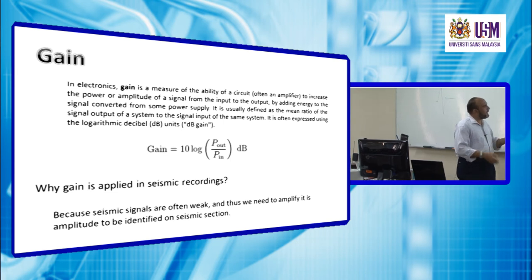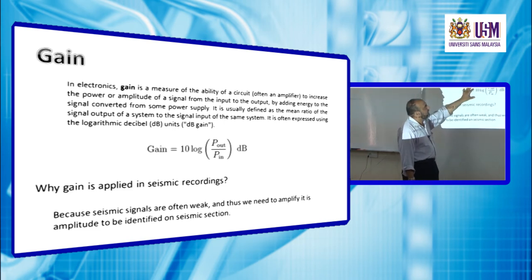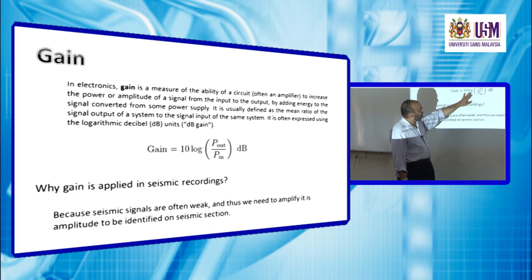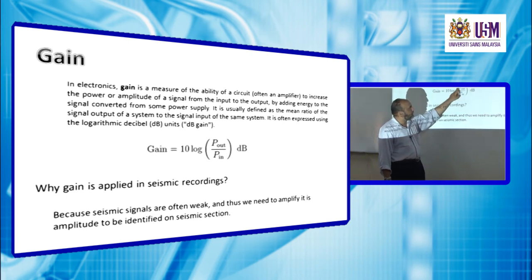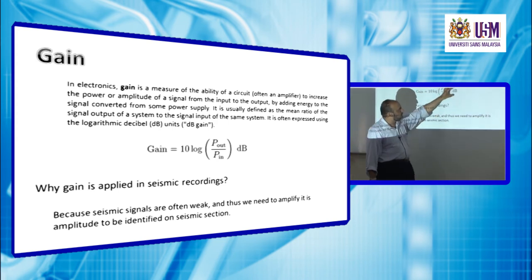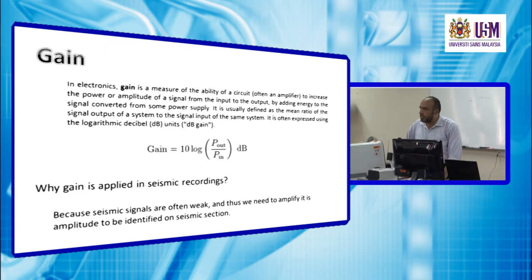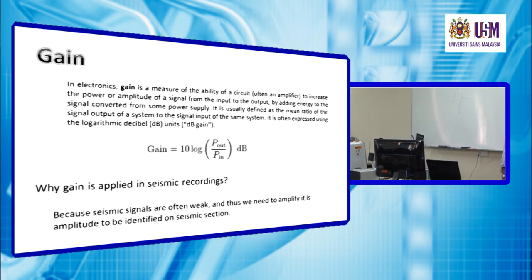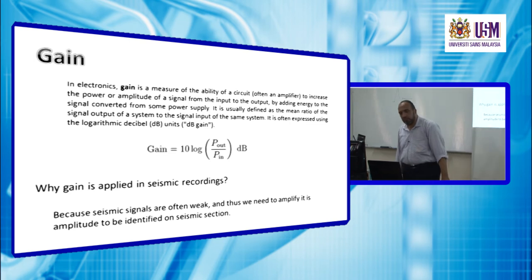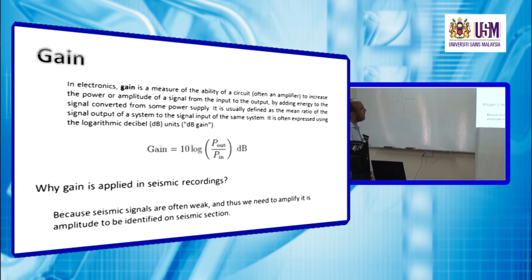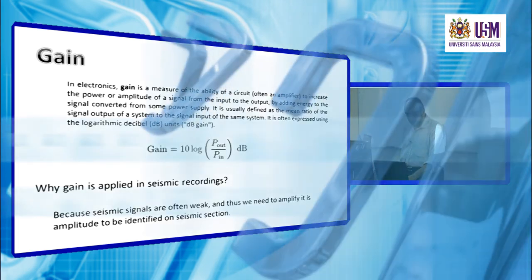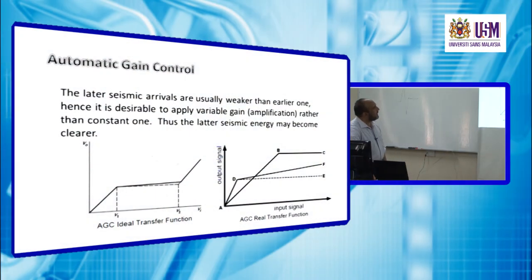Usually gain is expressed in units of decibel using this relation: it's equal to 10 log base 10 of the output signal divided by the input signal, and the unit is decibel. This relation is used not only in seismic but in radio, for example, and in other applications. You may hear this unit very often: the decibel. Why is gain applied in seismic recording? Because seismic signals are often weak, and thus we need to amplify its amplitude to be identified on seismic section.